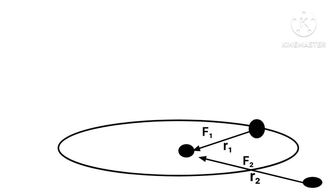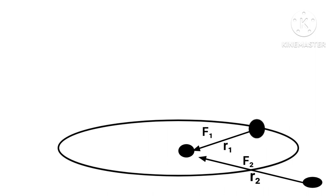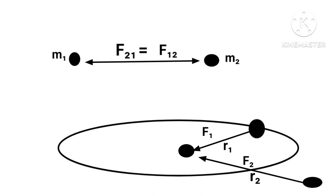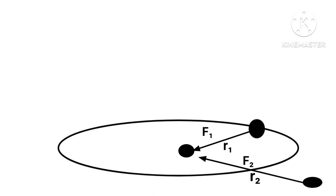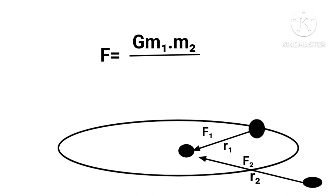Newton imagined force as inversely proportional to distance squared, that is, proportional to 1 upon d squared. Also, F is proportional to m. Hence, F is proportional to m upon d squared. But the force exerted on each other is the same by Newton's third law. Hence F is proportional to m times m upon d squared, or F equals Gm times m upon d squared.